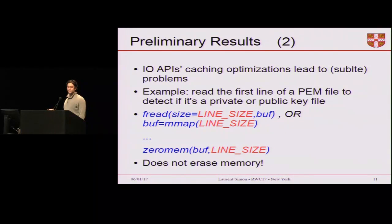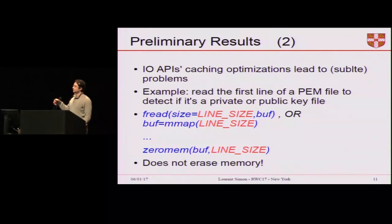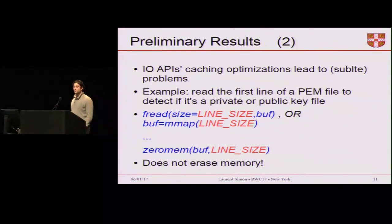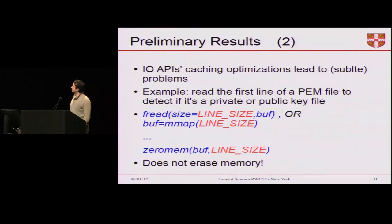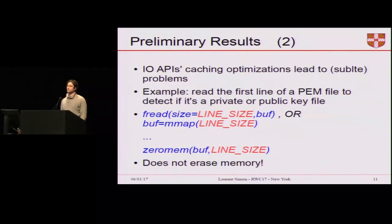For example, the GPG program, when trying to detect if a file contains a private key or a public key, reads the first line of the file — which in PEM format contains an ASCII string saying 'public key' or 'private key'. As a programmer, you'd open a file handle and call fread to read the first line, or call mmap to map the first line into memory. Once done, you zero the buffer. But this simple piece of code doesn't erase memory properly: mmap works at the page level, so even though you asked only for the first line, you get an entire page's worth of potentially sensitive data. And fread also does caching in case you call it again, to avoid a syscall.